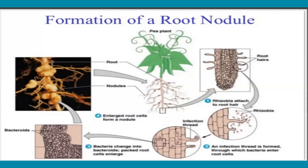The bacterial divisions are also accompanied by division of the plant membrane. Each bacterium or group of bacteria is surrounded by an envelope derived from the host cells. The enlarged or non-motile bacteria within these membranes are called bacteroids. A number of bacteroids are formed in the envelope.